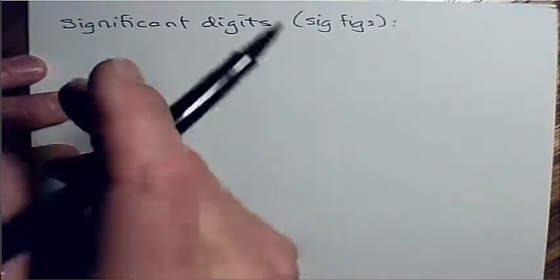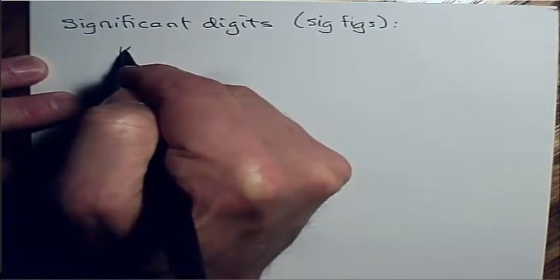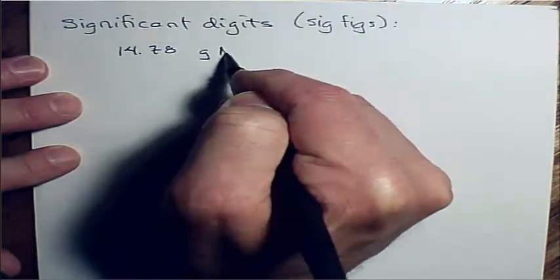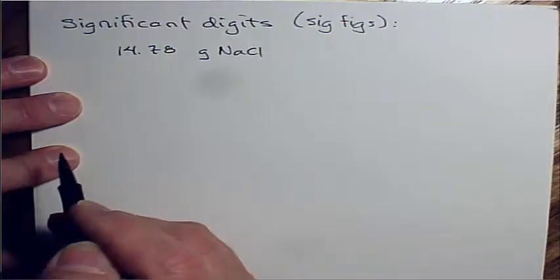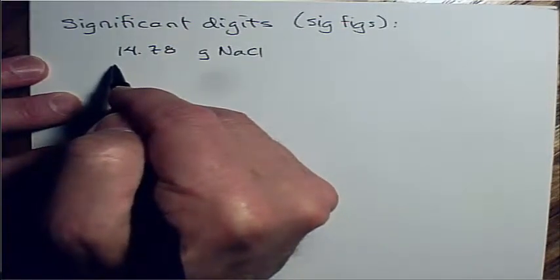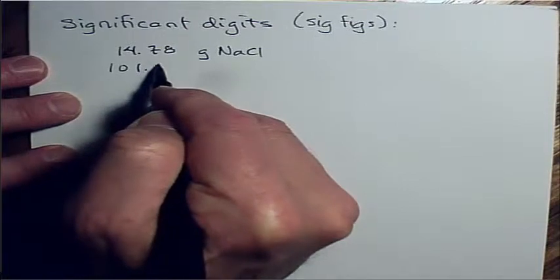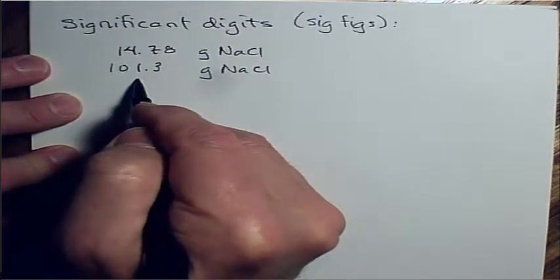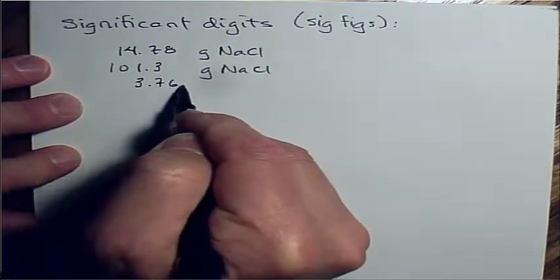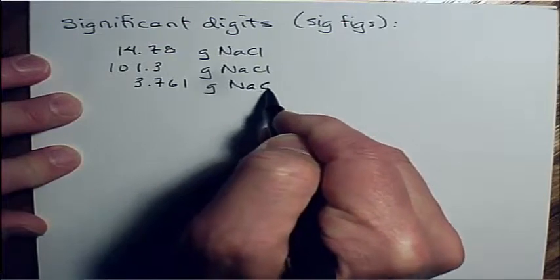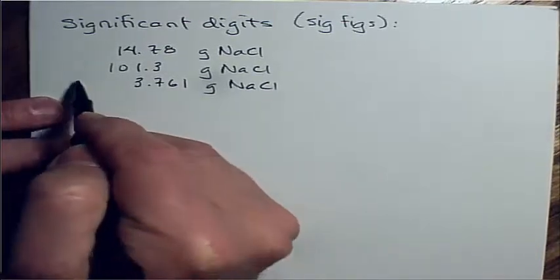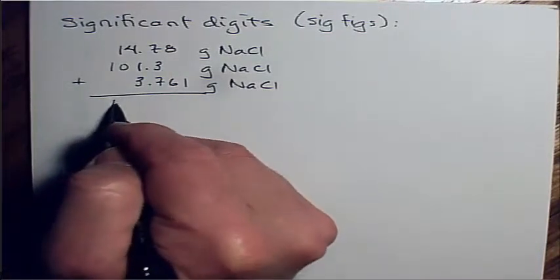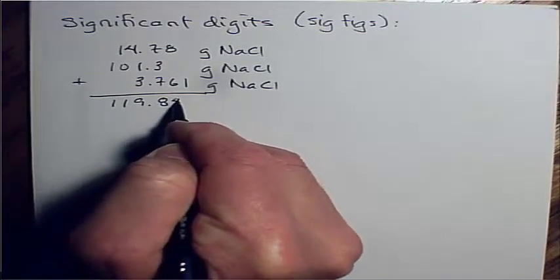We start with adding and subtracting. Let's say we're going to add three measurements together. Suppose I have 14.78 grams of table salt. I'm going to add that to 101.3 grams of table salt, and I want to add that to 3.761 grams of table salt. So I'm adding all these together. I get 119.841.